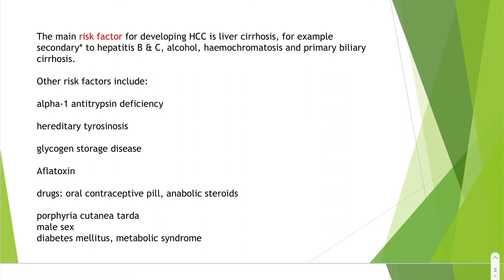Cirrhosis is mostly caused by hepatitis B and C. Other causes include alcohol, hemochromatosis, and primary biliary cirrhosis — now known as primary biliary cholangitis. Additional risk factors include alpha-1 antitrypsin deficiency, hereditary tyrosinosis, glycogen storage disease, aflatoxin, oral contraceptive pill, anabolic steroids, porphyria cutanea tarda, male sex, diabetes mellitus, and metabolic syndrome. The main ones to remember are viral hepatitis B and C, alcohol, hemochromatosis, and primary biliary cirrhosis.